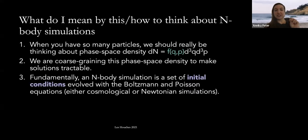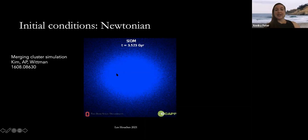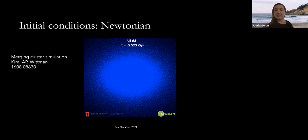There are two different types of initial conditions people generally use for simulations. For what I'll call Newtonian problems, you might want a staged set of simulations. For example, this is a snapshot from a movie my former student Dr. Stacy Kim made to understand the evolution of mergers of galaxy clusters. Because these are very rare events cosmologically, we try to understand the dynamics by starting with equilibrium dark matter halos and then smashing them at each other — like the bullet cluster.